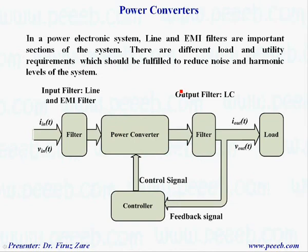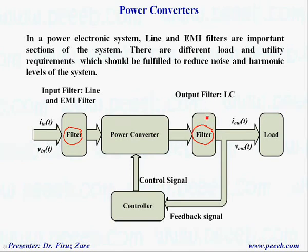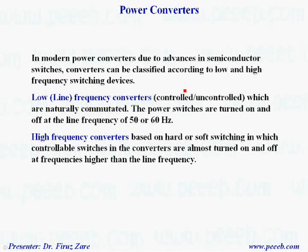In a power electronic system, line and EMI filters are important sections of the system. We need filters on the input side and also on the output side depending on the application. Sometimes we don't need an output filter, especially in AC motor drives, but for power system applications or UPS (uninterruptible power supply) we need an output filter. The input filter is also important because we should control low-frequency and high-frequency noise. In modern power converters, due to advances in semiconductor switches, converters can be classified according to low and high frequency switching devices.